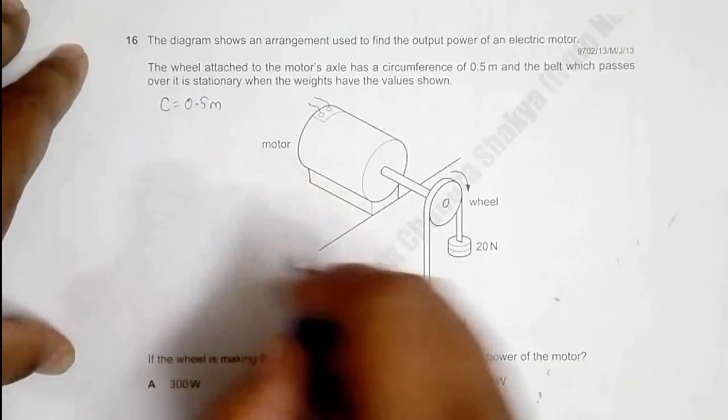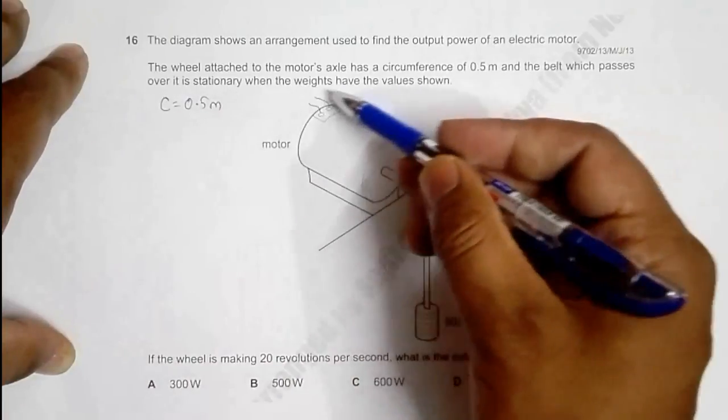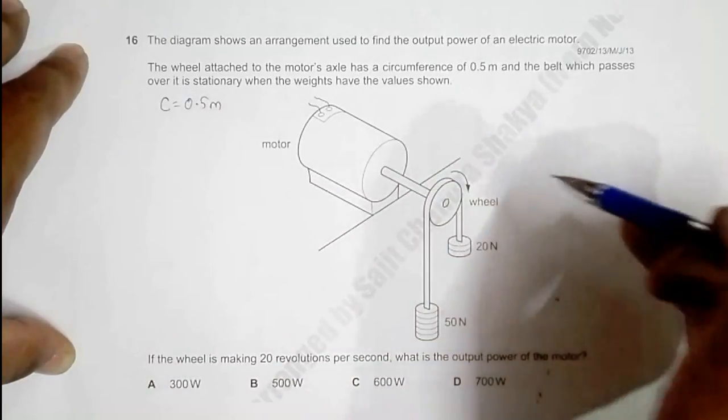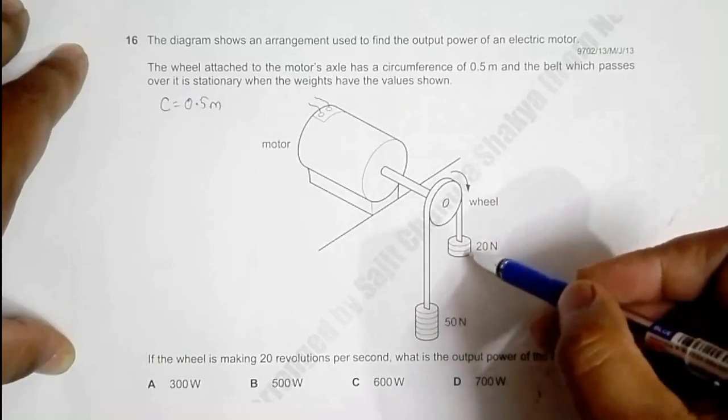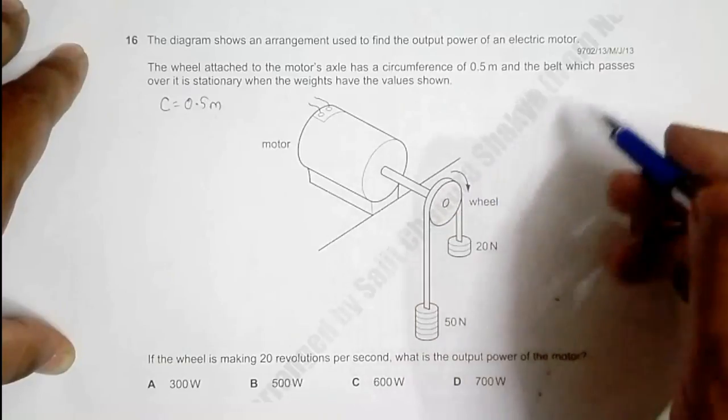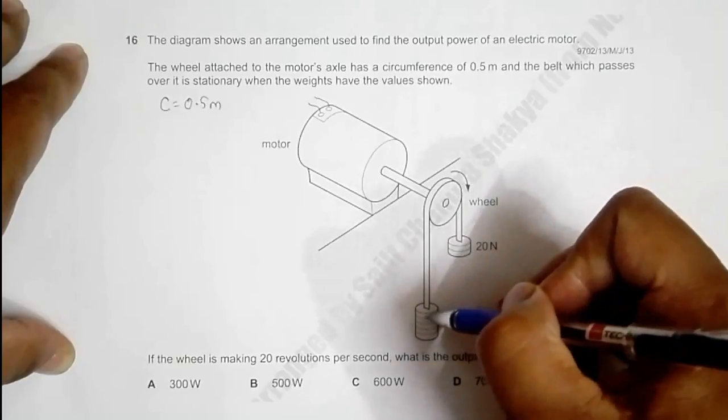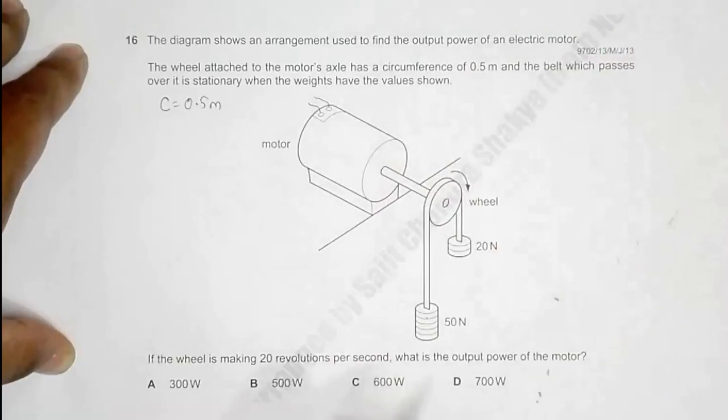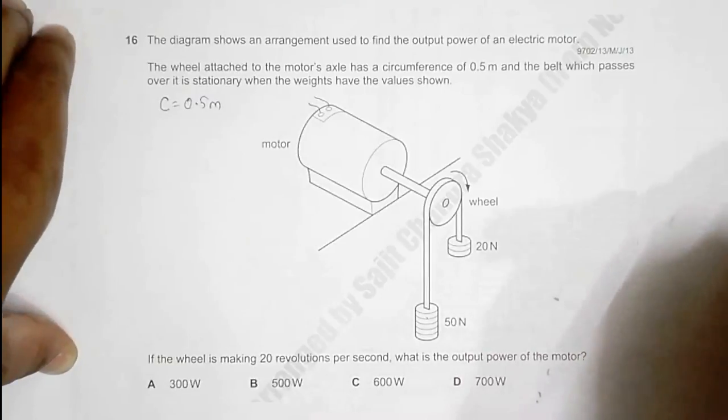The belt passes over weights and is stationary when the weights have the values shown. When the weights are like this, the system cannot rotate, meaning the work done by this and this is equal to the work done by this. If the wheel is making 20 revolutions per second, what is the output power of the motor?